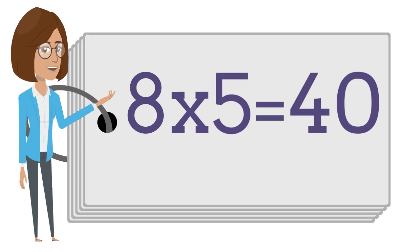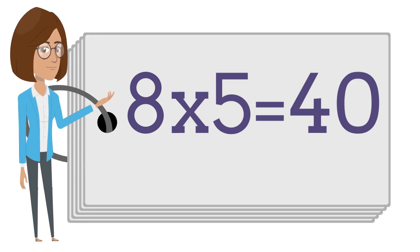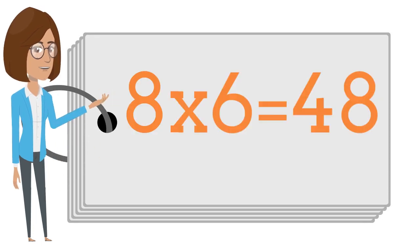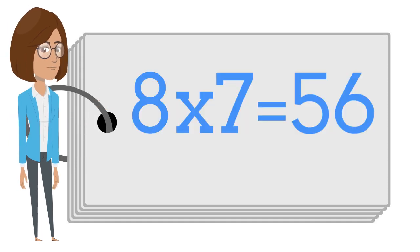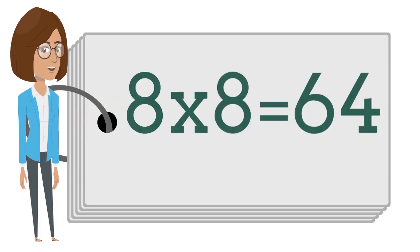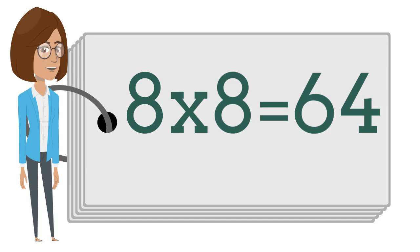8x5 is 40. 8x6 is 48. 8x7 is 56. 8x8 is 64.